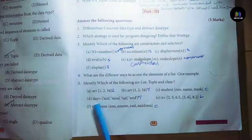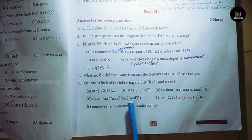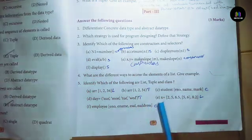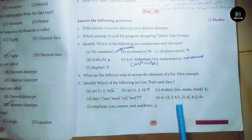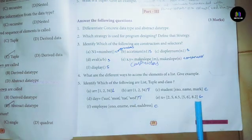D: day equals (Sunday, Monday, Tuesday, Wednesday) - This is tuple. E: x equals [2, 5, 6.5, 5, 6, 8.2] - List.